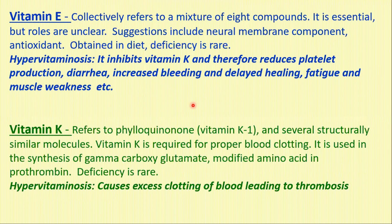The suggested roles of vitamin E include neural membrane component and antioxidant. It is obtained in the diet; deficiency is rare, but it can occur if one is not having good fats which contain vitamin E. Hypervitaminosis of E inhibits vitamin K and therefore reduces platelet production. It also causes diarrhea, increased bleeding, delayed healing, fatigue, and muscle weakness.